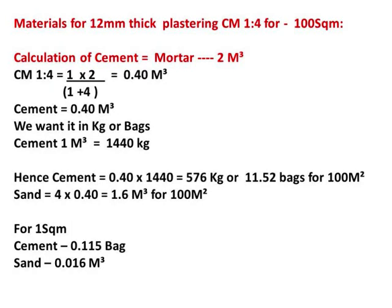Now using the same calculation as the previous slide, but for cement mortar 1:4 at 12 mm thickness for 100 square meters. The dry volume remains the same at 2 cubic meters, which is the dry volume of cement mortar required for 100 square meters at 12 mm thickness, inclusive of the 30% extra for uneven surfaces.